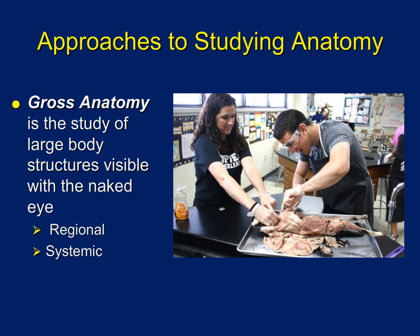Macroscopic or gross anatomy can be divided into regional or systemic anatomy. Regional anatomy is where we look at all the body structures in a particular region — for example, the brachium or arm, looking at the muscles, nerves, and blood vessels. On the other hand, a systemic approach looks at anatomy by body systems, which is what we're going to do in this course: starting with skeletal anatomy, then moving to the muscular system, and so on.